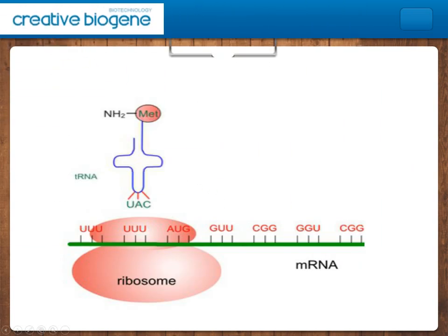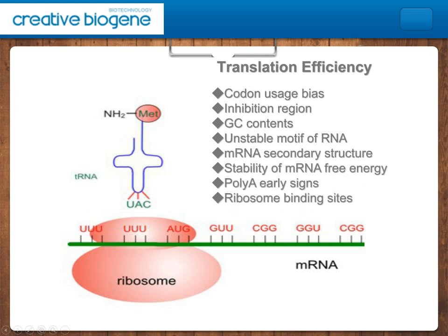Secondly, translation efficiency. There are many factors which affect translation efficiency: codon usage bias, inhibition region, GC contents, unstable motif of RNA, mRNA secondary structure, stability of mRNA free energy, and poly-A signals and ribosome binding sites.